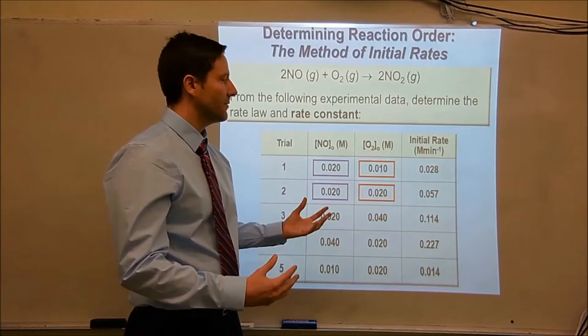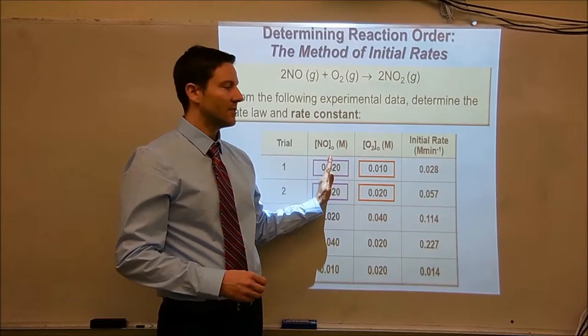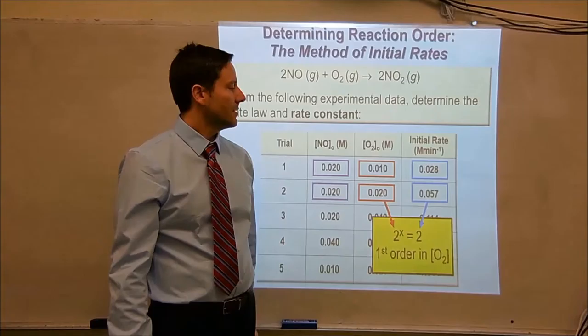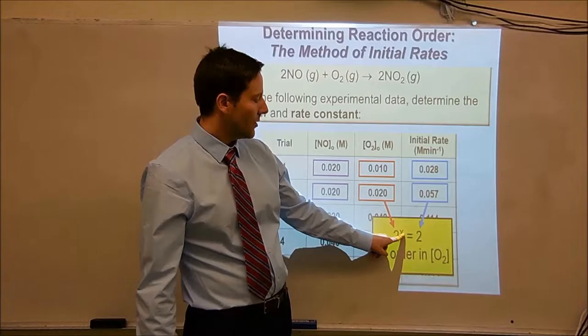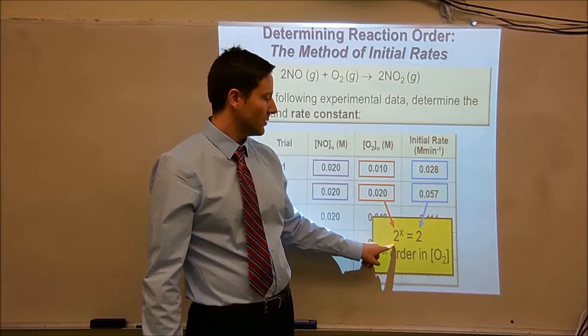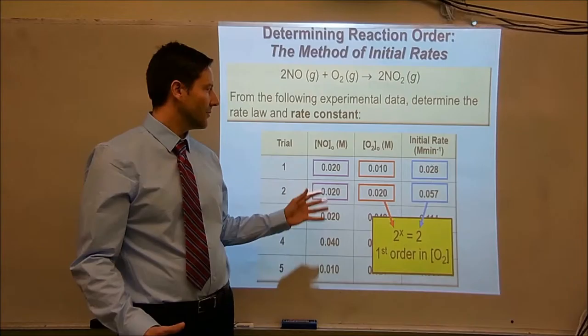Whatever happens to the rate of the reaction is all going to be because of the doubling of oxygen, because nitric oxide stayed the same. It turns out the initial rate is increased by a factor of two. So oxygen was doubled and the rate was increased by a factor of two. Two to the x equals two, x is one — two to the first is two. So this reaction is first order in oxygen.